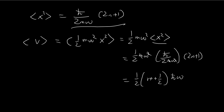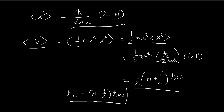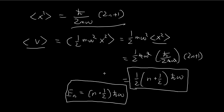An interesting comparison: the energy of the nth stationary state is E_n = (n + 1/2) ħω. So you can see that the expected value of the potential is exactly half of the total energy. This is a pretty interesting result — the potential energy accounts for exactly half of the total energy of the harmonic oscillator.